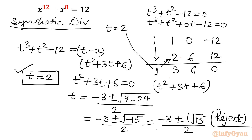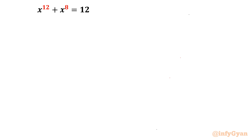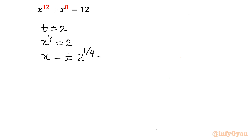We started this problem by substituting x^4 = t. So t = 2 means x^4 = 2. Therefore x = ±2^(1/4), or equivalently ±√(√2).